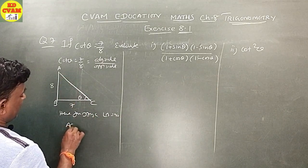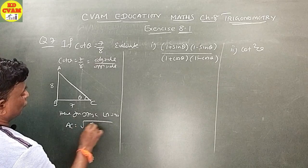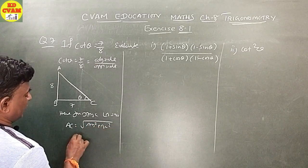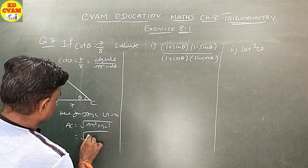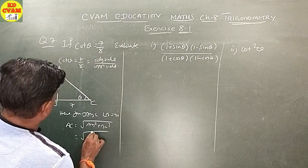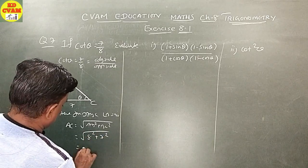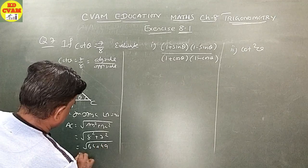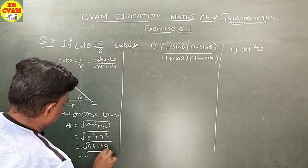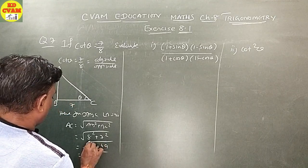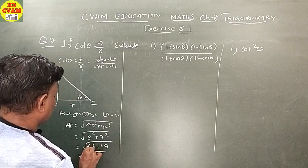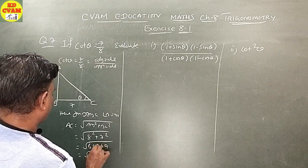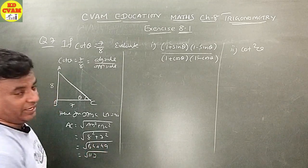By Pythagoras, AC is equal to square root of AB square plus BC square. That is, square root of 7 squared plus 8 squared, equals square root of 49 plus 64, equals square root of 113.